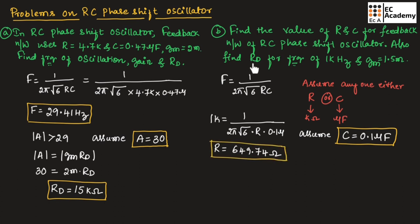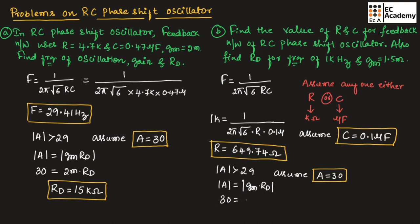Now we need to find the value of RD. Taking gain greater than 29, let us assume gain = 30. Since gain = gm · RD, we have 30 = 1.5 mA/V × RD, giving RD = 20 kΩ.